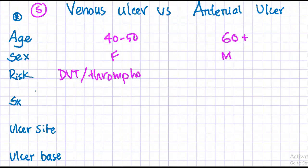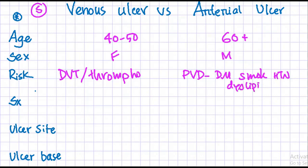In the case of arterial ulcers, the common risk factors are those for PVD, or peripheral vascular disease, such as diabetes, smoking, hypertension, and dyslipidemia.